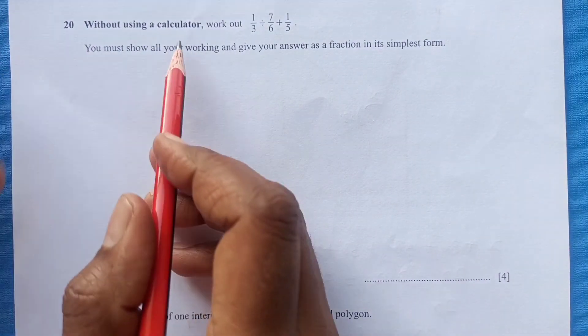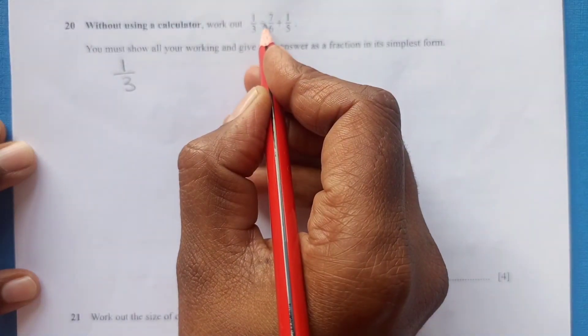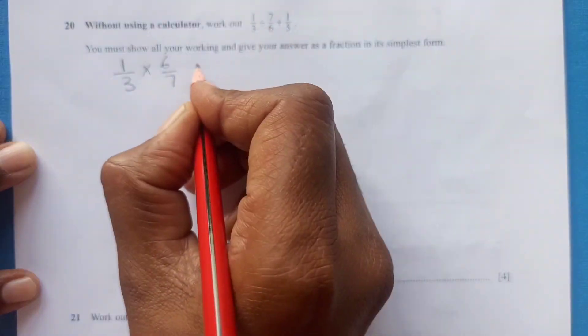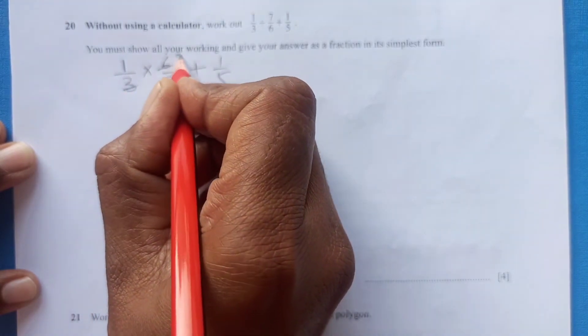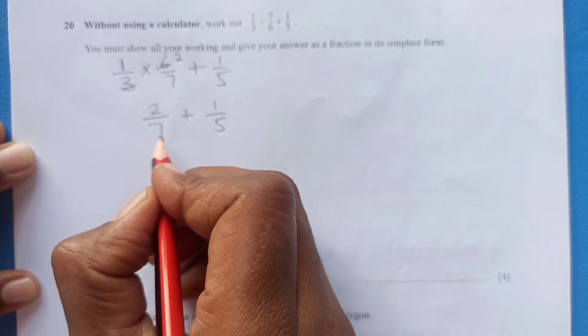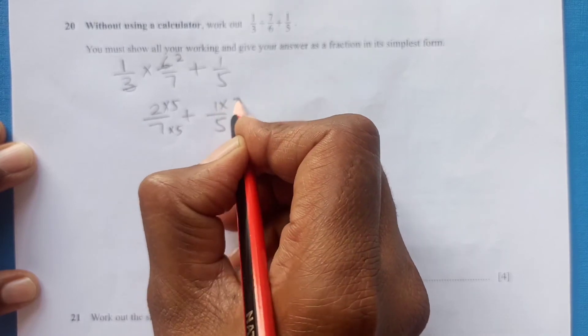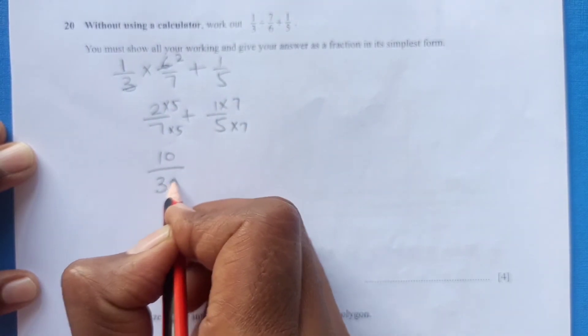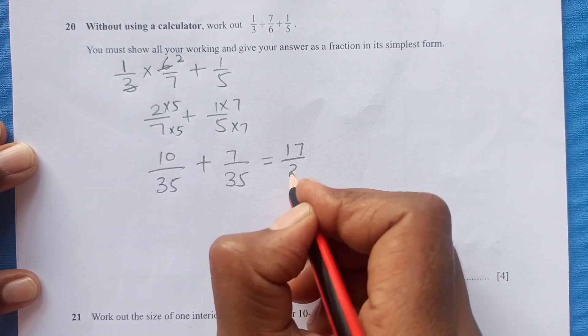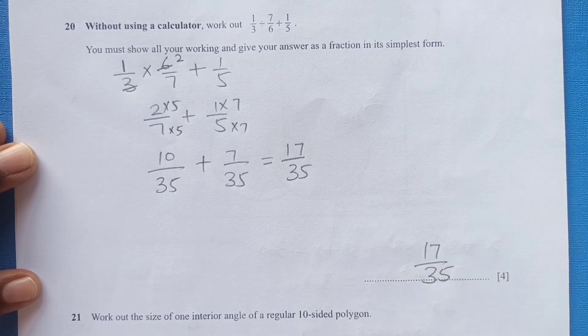Question 20. Without using a calculator work out this. We have 1 over 3 times 6 over 7 plus 1 over 5. So calculate simplify this will be 2 over 7 plus 1 over 5. Now you need denominator same. We can multiply here by 5 and you can multiply here by 7. So 5 times 2, 10 over 35, 7 over 35. So this is 17 over 35, that is our answer.